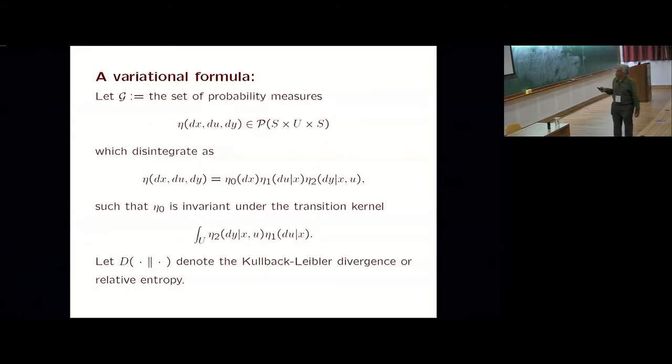The next thing to try was getting an analog of Donsker-Varadhan formula. I have to define script G. This is a probability measure on product space S cross U cross S, which I decompose like this. This is the marginal distribution on the first component. This is conditional distribution of the control given X, because I am randomizing controls. This would be the conditional distribution of the next state given the current state and current control. Any measure on the triple can be decomposed in this way. I can always interpret this as a control because that's what randomized controls are.